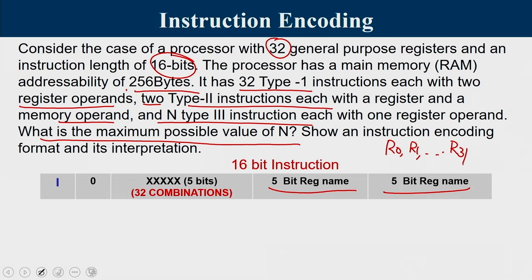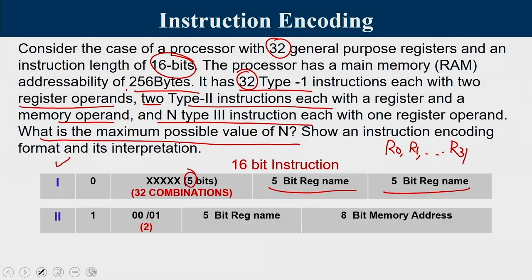There are 32 such Type 1 instructions, requiring another 5 bits for the opcode. So we use 5 bits for the first register operand, 5 bits for the second register operand, and 5 bits for representing 1 among the 32 Type 1 instructions. There is only 1 bit left, and that is set to 0. This is basically your Type 1 instruction format.